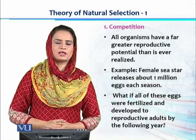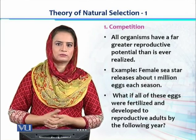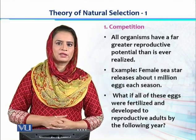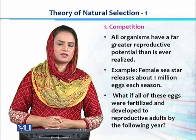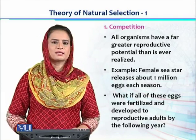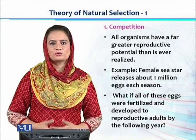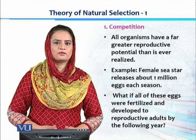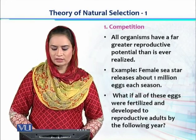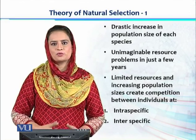Most organisms present in one habitat have a greater reproductive potential as compared to bigger animals. So mostly all smaller animals up to the level of birds have a greater reproductive potential. For example, a female sea star could release about one million eggs each season. Agar hame assume kare yeh one million eggs all of them are fertilized, yeh sab develop ho jate hai and get opportunity to develop into adults, become mature and all these one million are capable of reproducing and producing one million eggs again in the next generation.